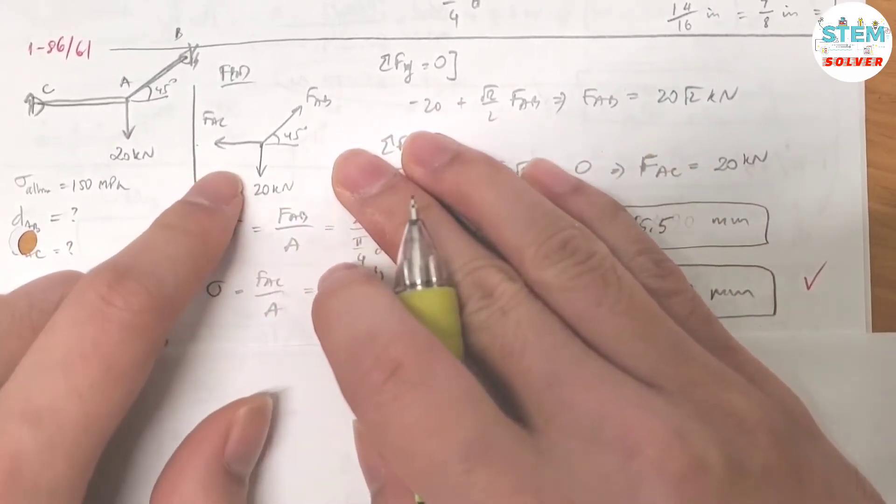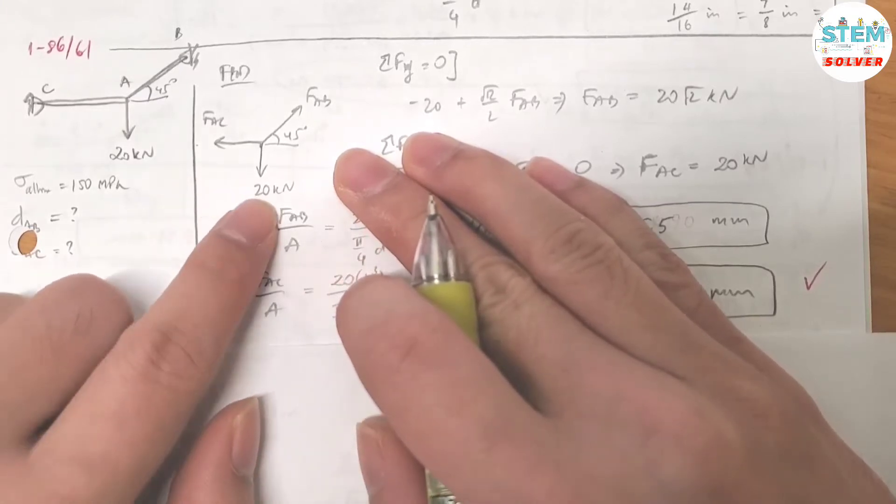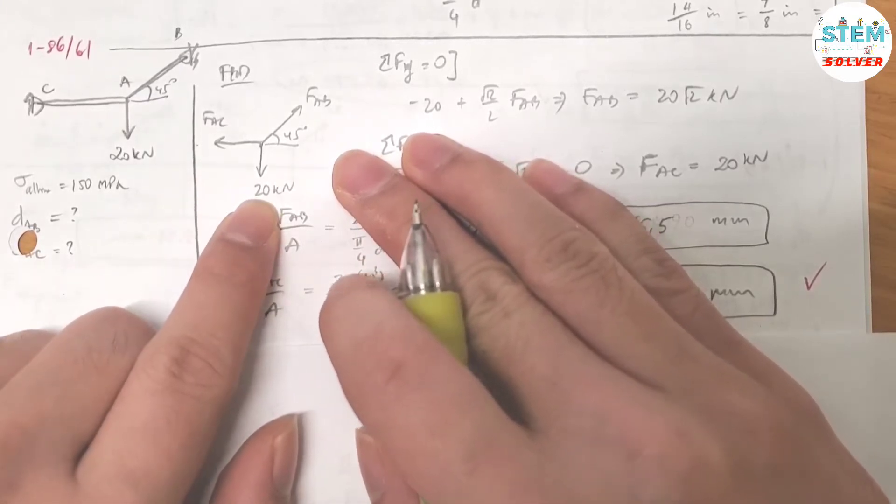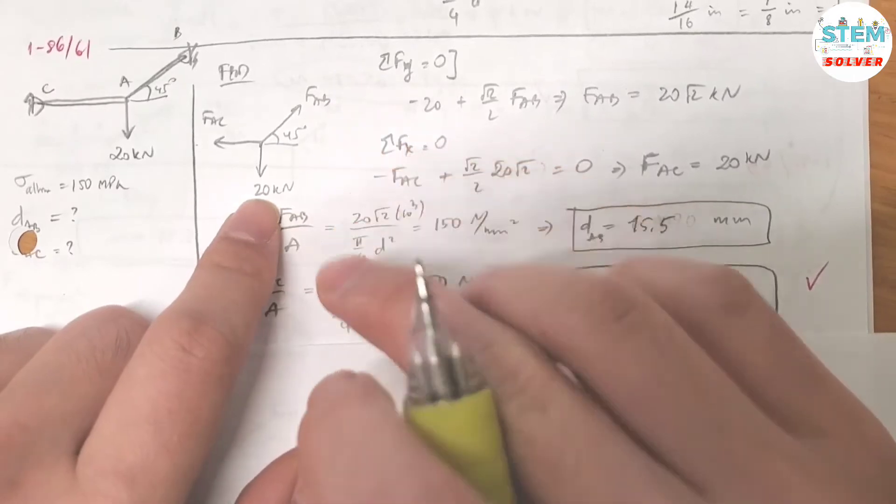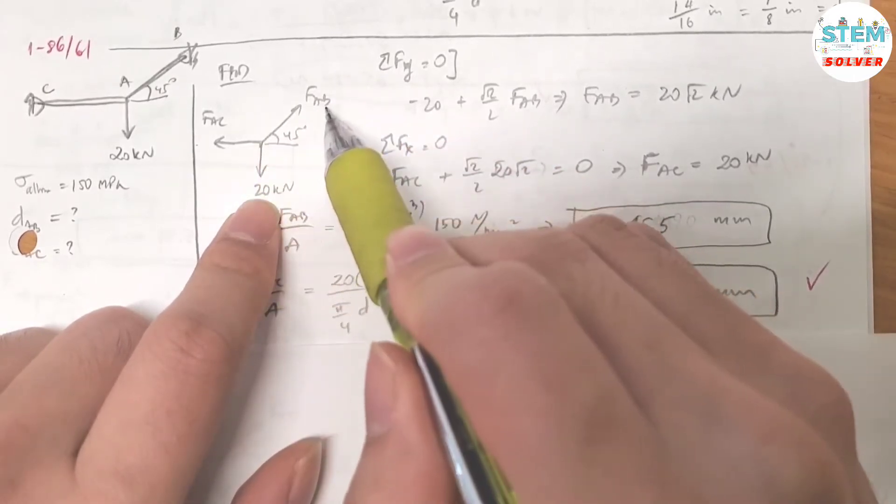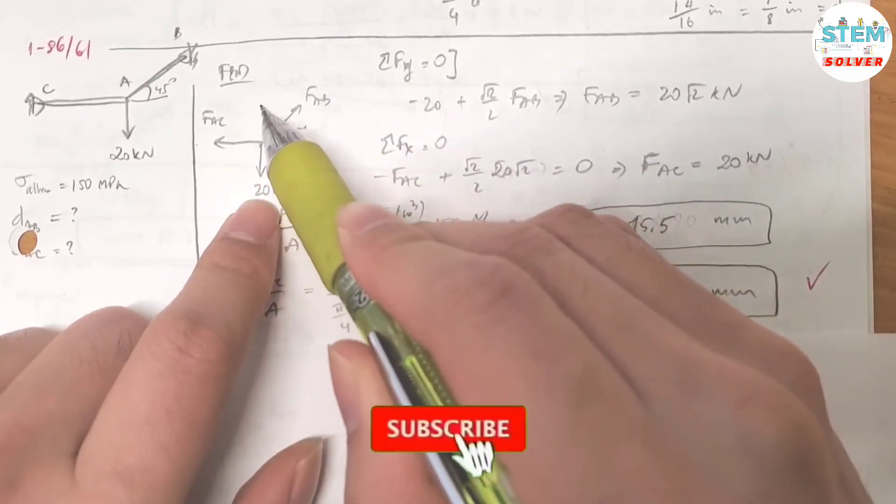First of all, I took the summation about the y-axis, so I have negative 20 plus... For f, you can break it down into x and y components.